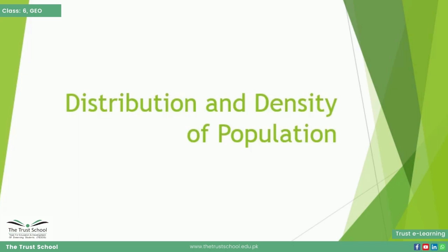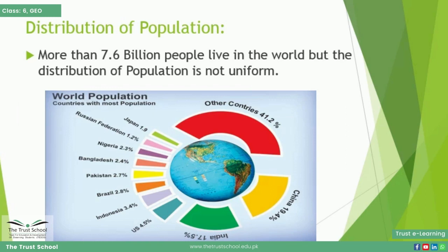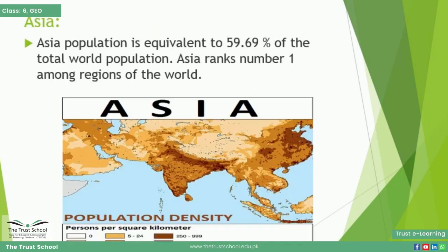Distribution and density of population: dear students, almost more than 7.6 billion people live in the world. The distribution of world population in different continents is as follows. First, we will discuss Asia. Asia is number one in terms of population, and 59.69 percent of the world's total population lives here.